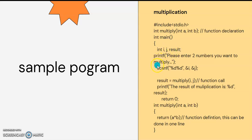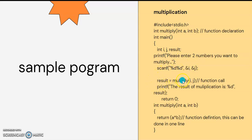Listen to the user input. We are going to multiply two numbers using scanf with format specifiers percent d for i and percent d for j. Then we will save the value. In the next step, we select the result of multiply(i, j). This is how we call a function.